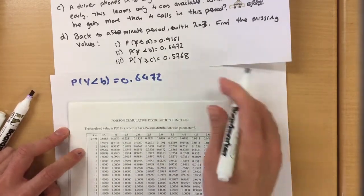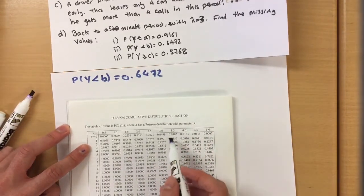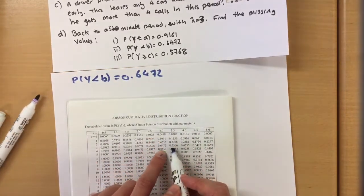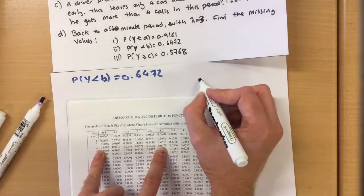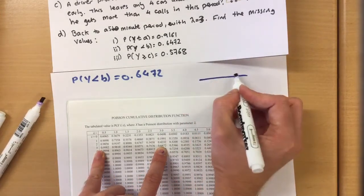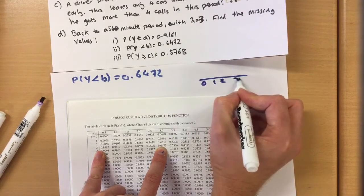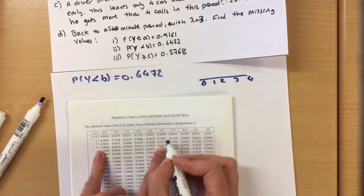So again we can look up the value in our table for 0.6472 under 3, and that is 3. So 0 1 2 3 4, remember our table.